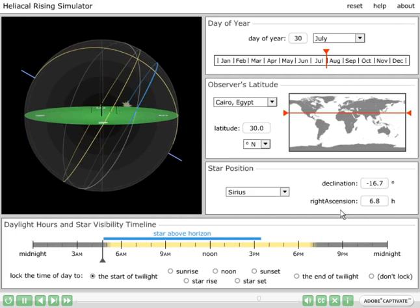So the heliacal rising is starting around July 30th from Cairo, and Sirius has reappeared after being gone from the night sky for about two months.